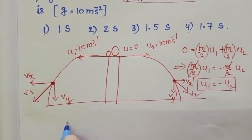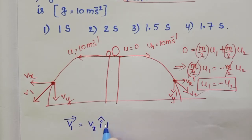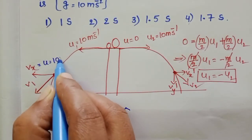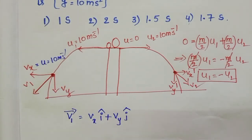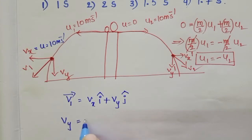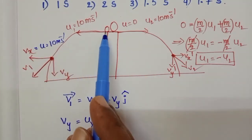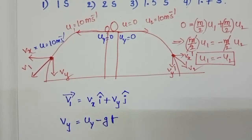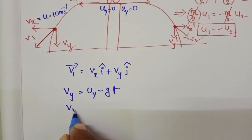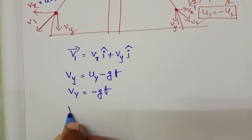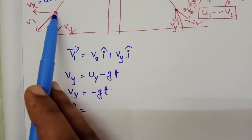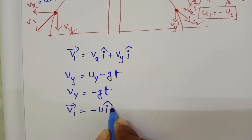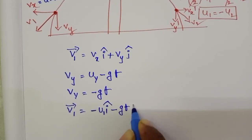The velocity vector V1 at that point is: V1 = Vx î + Vy ĵ. Here Vx = U = 10 m/s (constant). To find Vy, we use the equation of motion. Initially there is no vertical velocity, so Uy = 0. Therefore Vy = −gt. Since the first fragment's horizontal velocity acts along the negative x-direction: V1 = −U î − gt ĵ.